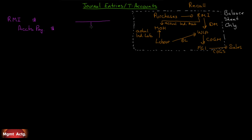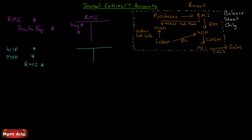Let's do the first arrow — purchases to raw materials inventory. Raw materials inventory increases, and accounts payable increases. It must be a balance sheet account. In the T-account for raw materials inventory, we may have some beginning balance. For the second arrow — raw materials — we have direct and indirect. Direct materials go into work in process; indirect materials go into manufacturing overhead. We reduce the amount in raw materials inventory. We need T-accounts for manufacturing overhead and for work in process, and we credit raw materials because it's leaving raw materials.